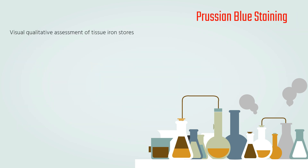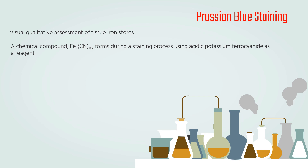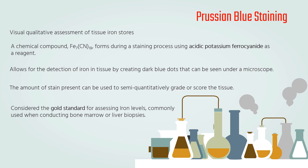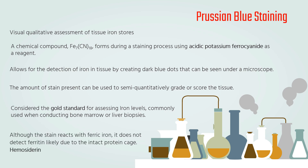Prussian Blue staining is a visual qualitative assessment of tissue iron stores. Prussian Blue is a chemical compound with the formula Fe₇[Fe(CN)₆]₁₈ that forms during a staining process using acidic potassium ferrocyanide as a reagent. This process allows for the detection of iron in tissue by creating dark blue dots visible under a microscope. The amount of stain present can be used to semi-quantitatively grade the tissue. This staining method is considered the gold standard for assessing iron levels in the body and is commonly used in bone marrow or liver biopsies. Although the stain reacts with ferric iron, it does not detect ferritin, likely due to the intact protein cage. Hemosiderin is easily detected by the stain.